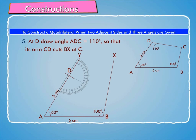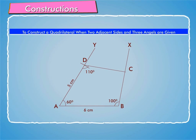Step 5: At D, draw angle ADC equal to 110 degrees so that its arm CD cuts BX at C. Then ABCD is the required quadrilateral.